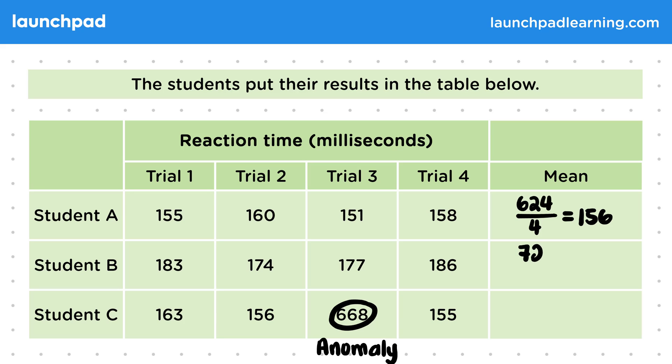Let's do the same for B. So the mean reaction time for student B was 180 milliseconds. And for student C, it was 158 milliseconds.